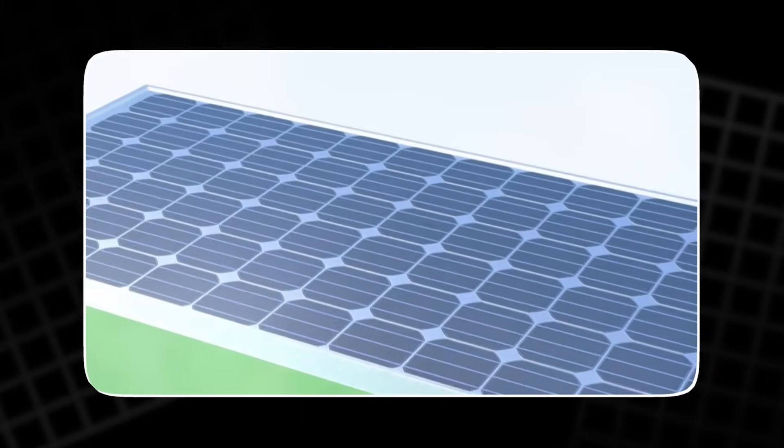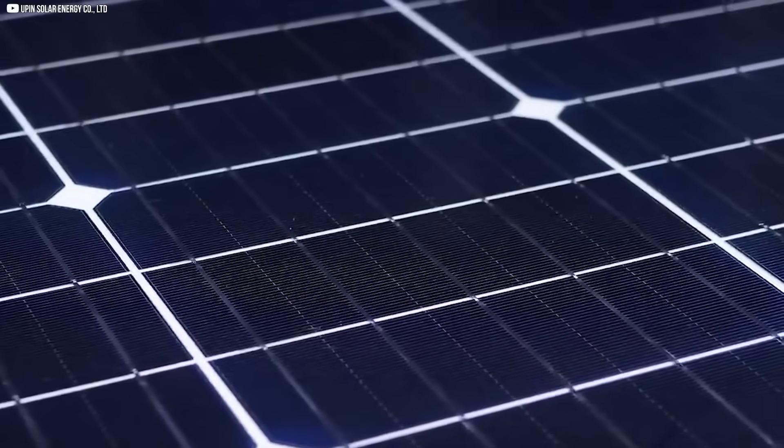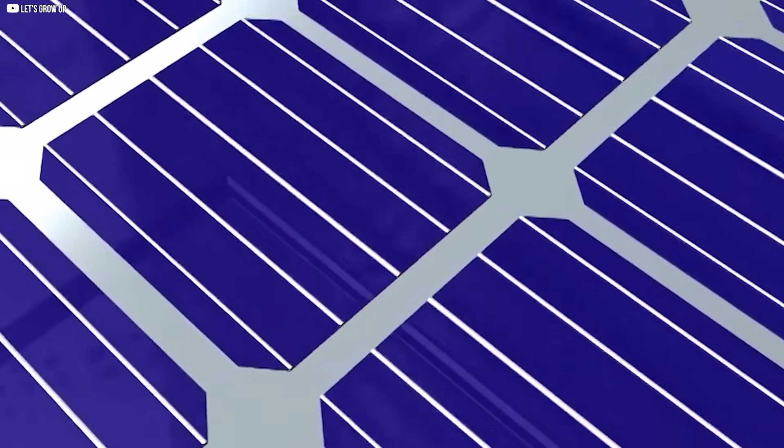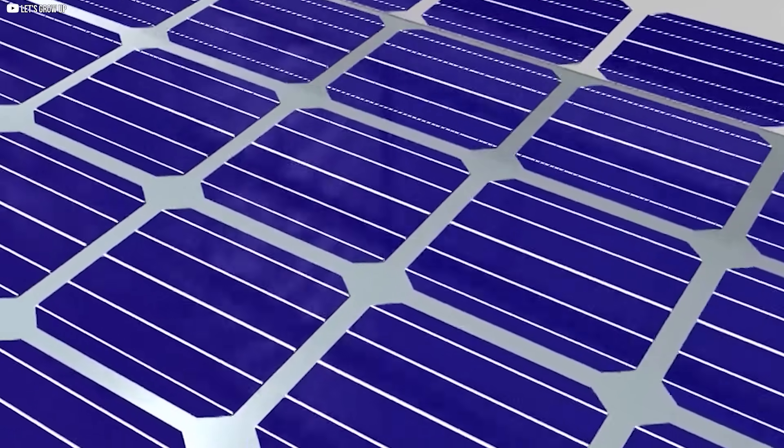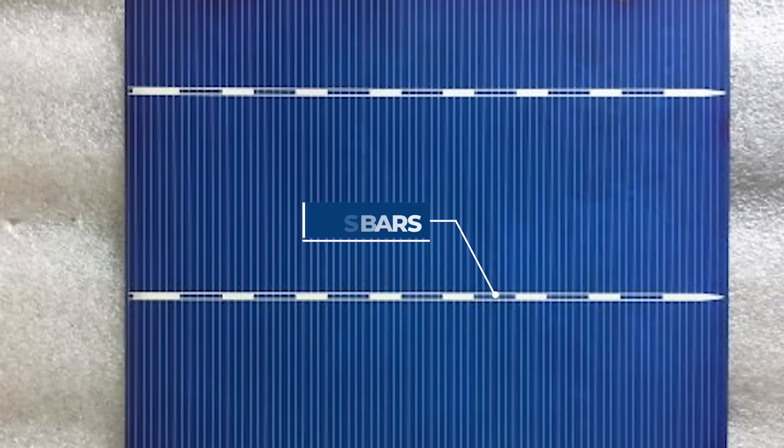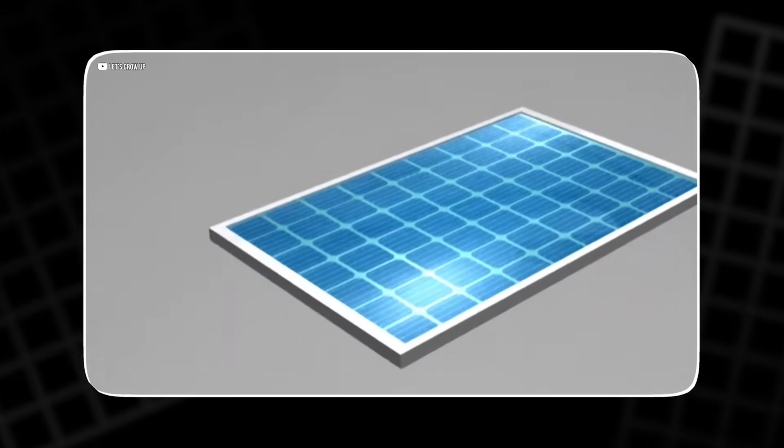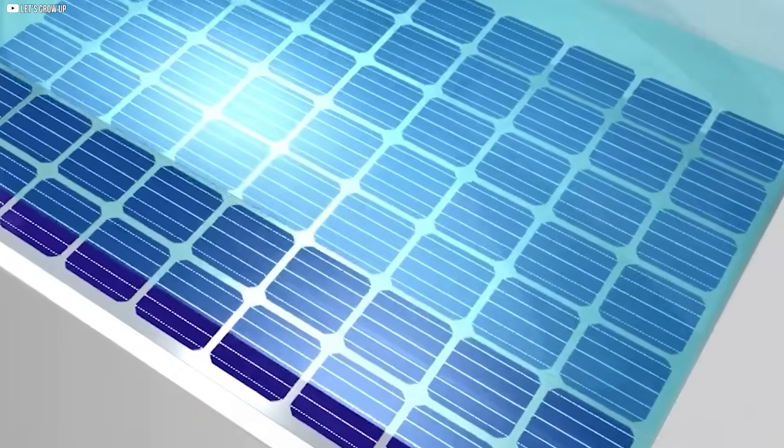The star of the show comes next, the solar cells themselves. Dozens of these individual cells are laid out in a grid pattern, wired together so their voltage and current add up in just the right way. Thin metallic lines called fingers stretch across each cell, collecting the flow of electrons like tiny highways. These fingers connect to thicker lines called bus bars, which carry the combined electricity out of the panel. Once the cells are connected, another layer of EVA film goes on top, locking everything in place.